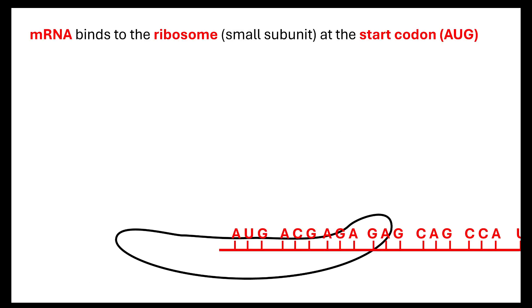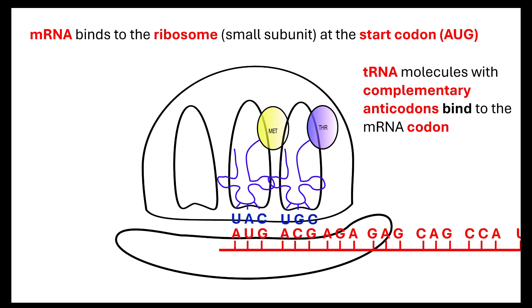So, how does it all work then? What is translation? So, our mRNA has left our nucleus. It's come through the nuclear pore. And what will happen is it will bind to the ribosome. It binds to the small subunit and it binds at what's known the start codon, AUG. What will then happen is the tRNA molecule with the complementary anticodon will come and bind to the mRNA codon. Because they are complementary, they can therefore form hydrogen bonds.